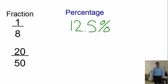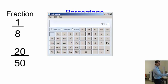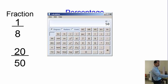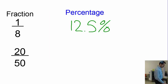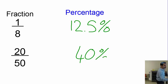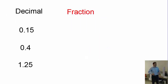We're going to make it a decimal first: 20 divided by 50 equals 0.4. Then multiply by 100, which gives us 40 — so the answer is 40%. Don't forget the percentage sign. Next: decimal to fraction. How do you make a decimal number into a fraction? Extremely easy.